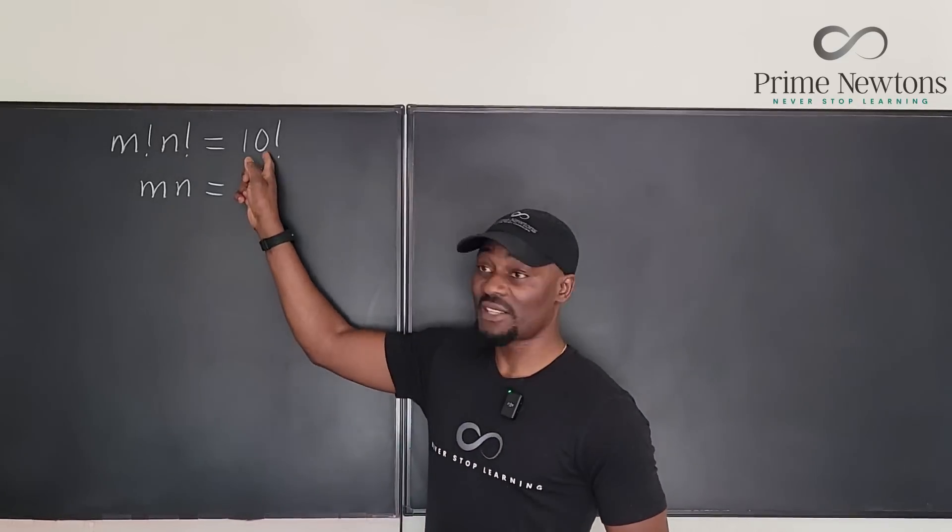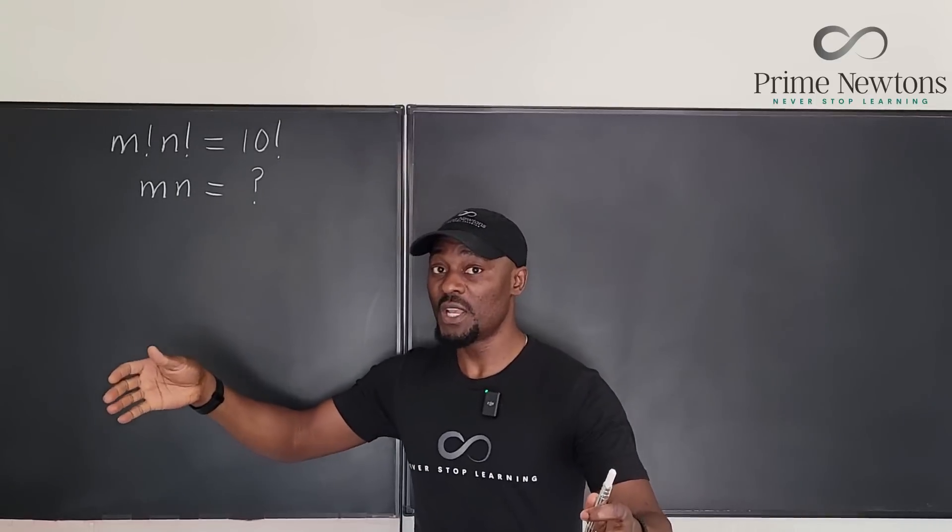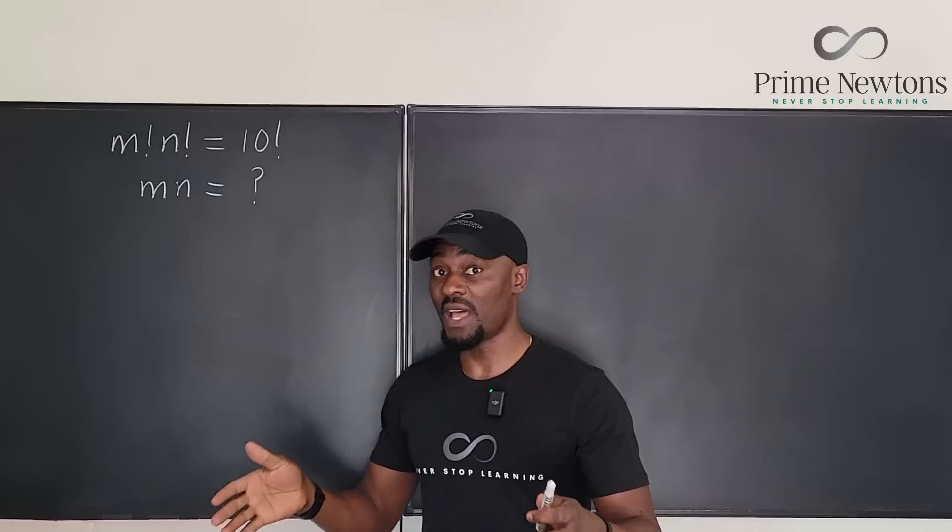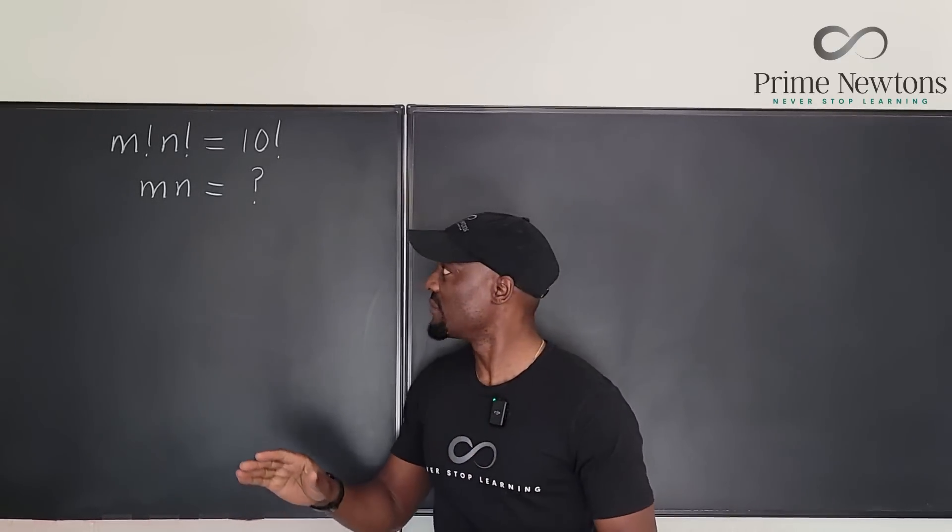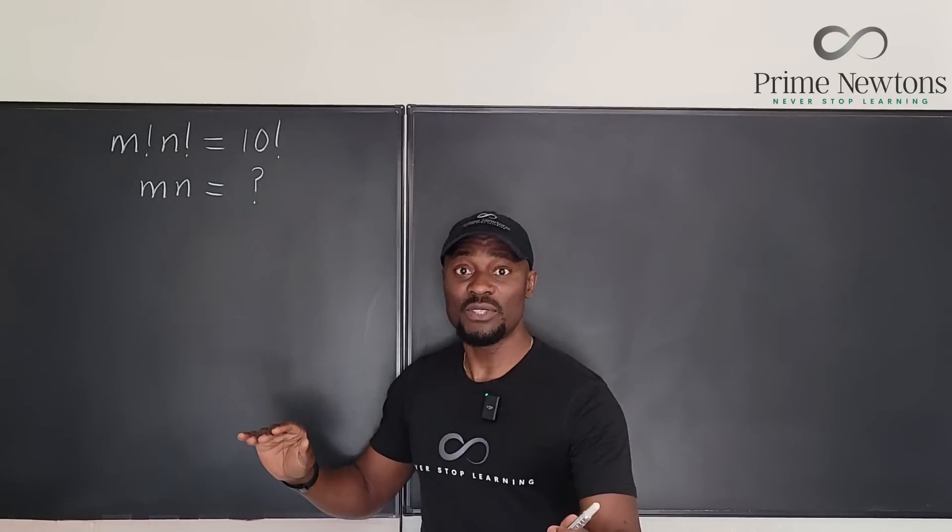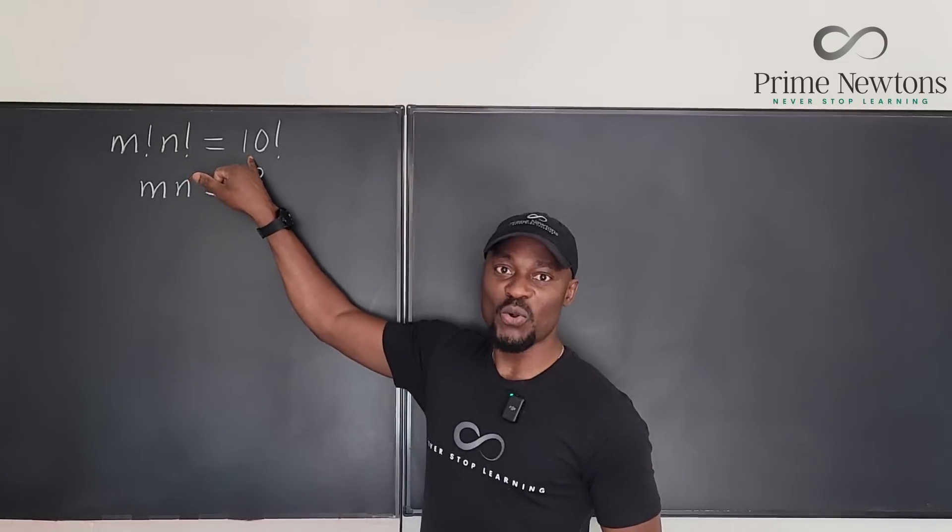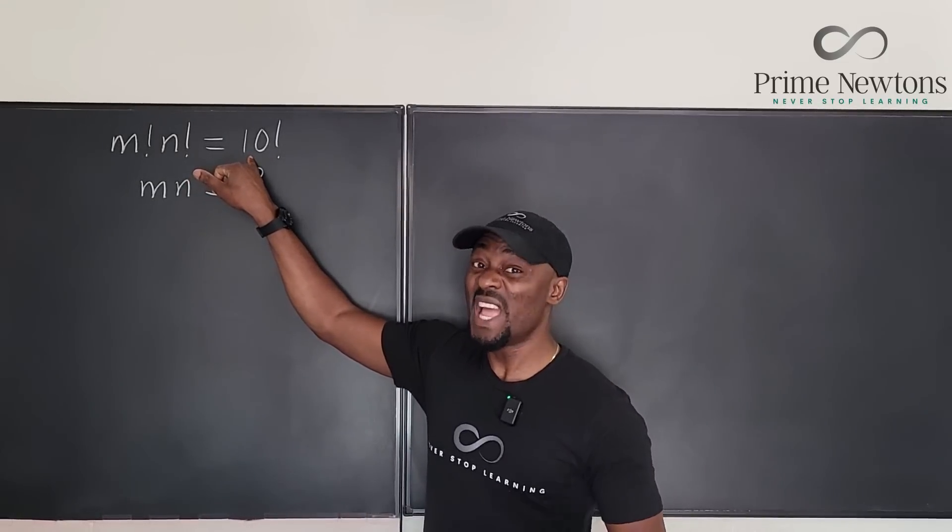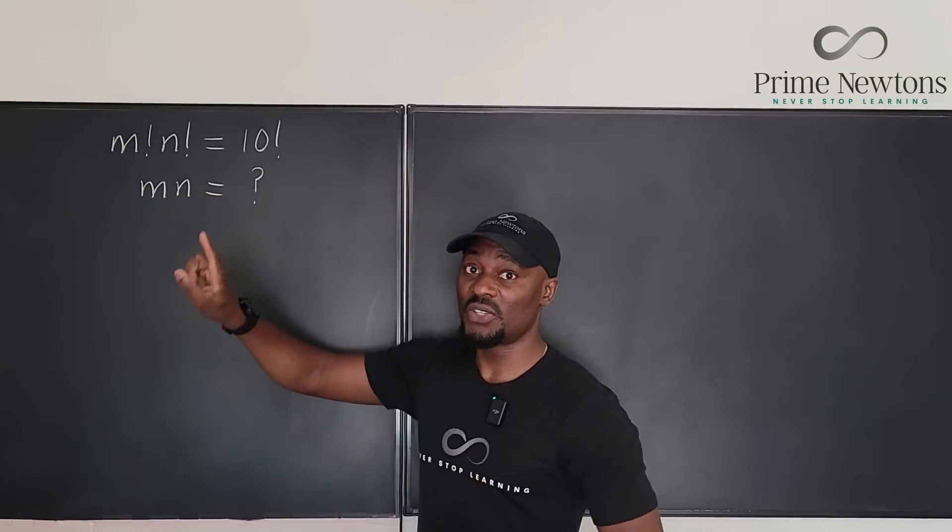...to break down 10 factorial and see if we can find two numbers that are factorials that multiply each other. Well that might sound confusing, but that's what we have to do. You have to find two factorial multiplications from all the factors of 10 factorial, and definitely since you know m and n are multiplying each other to get 10 factorial...